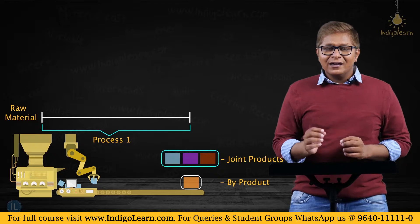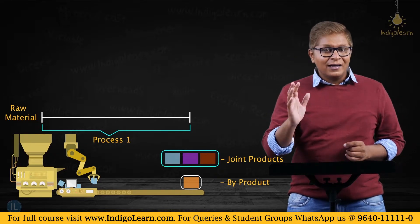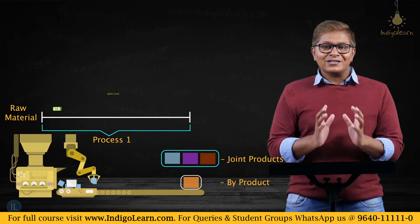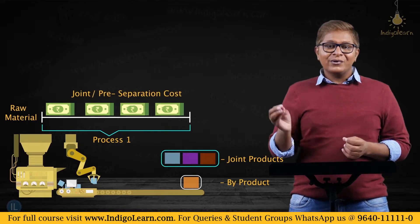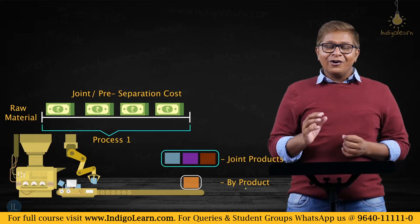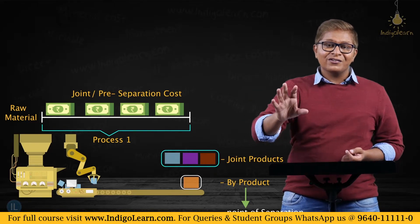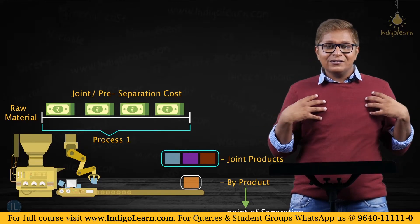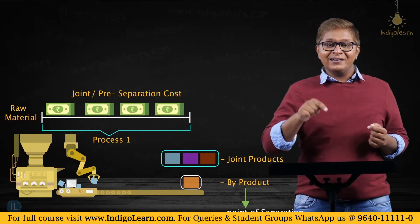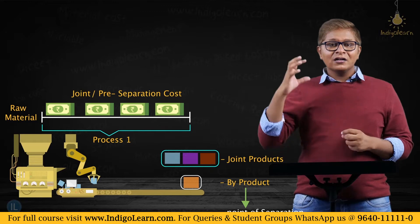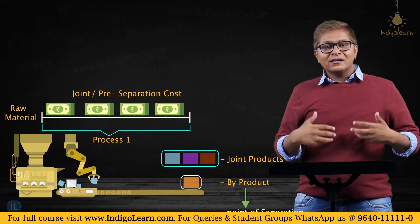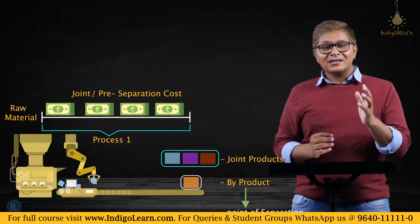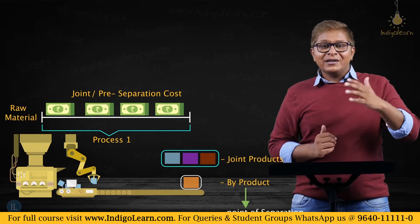The costs incurred in process 1, including the cost of raw material and the conversion costs, are called joint costs. All costs incurred up to the point of separation — whatever cost we incur for the common processing of raw materials, incurred jointly for all the products — are called joint costs. These joint costs are sometimes also called pre-separation cost.